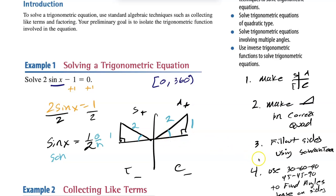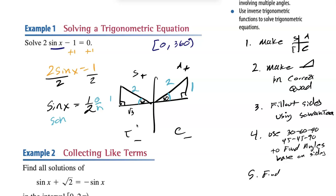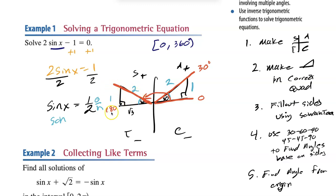You have to know your special triangles. When opposite is 1 and hypotenuse is 2, the angle is 30 degrees because the missing side must be √3. So both triangles give us a 30-degree reference angle. The last step is to find the angles from the origin. The first angle is simply 30 degrees. For the second, since we're in quadrant 2, it's 180 minus 30, which equals 150. So the answers are 30 and 150 degrees — that's where sine equals 1/2 from 0 to 360.